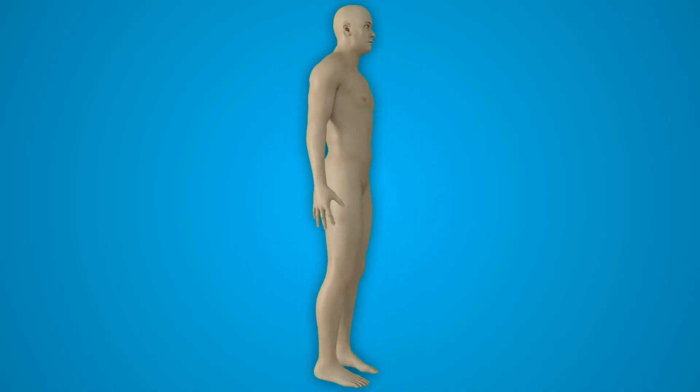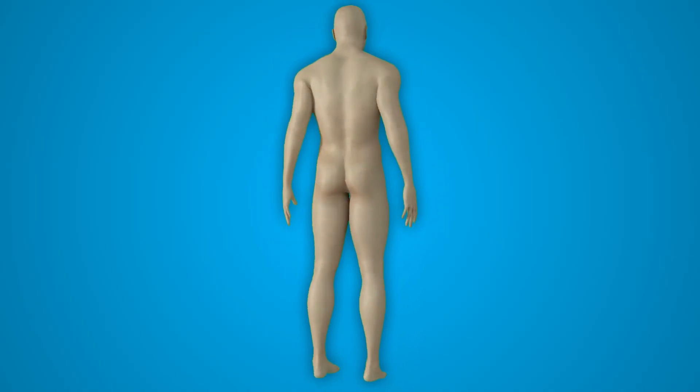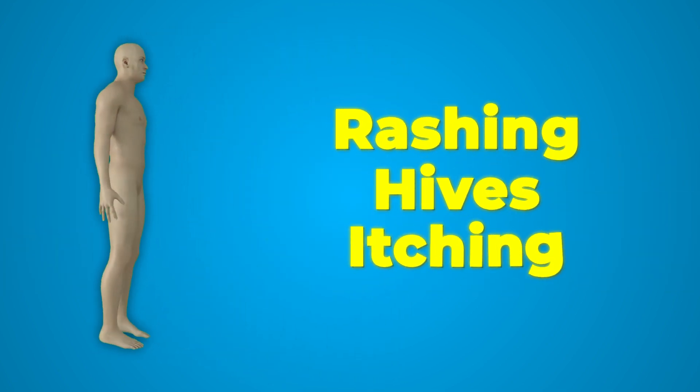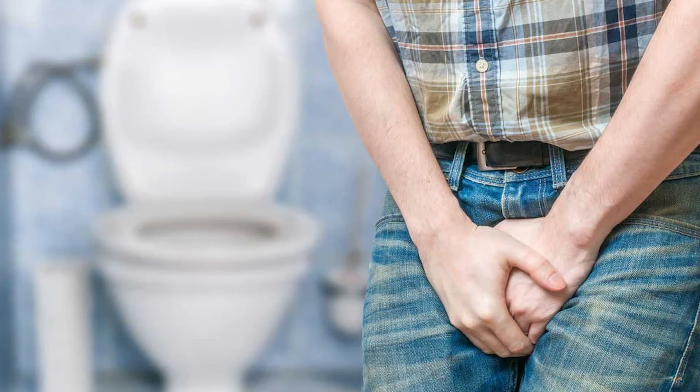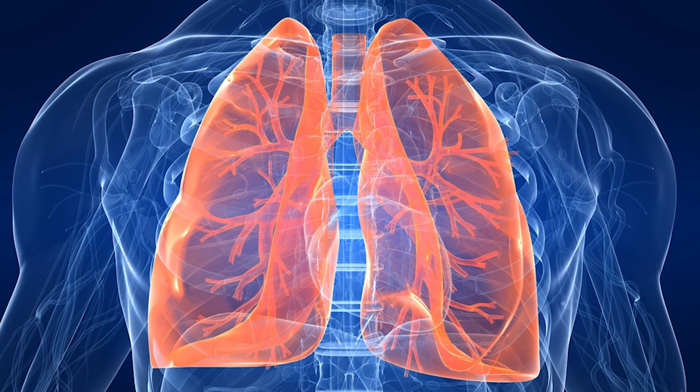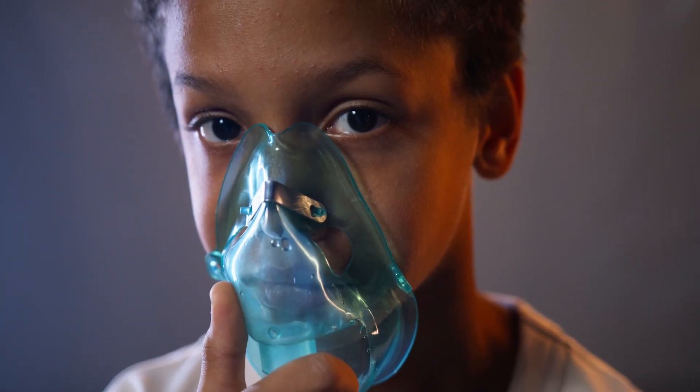Now these are common symptoms, and it's important not to just race to a judgment that it's mast cells causing them. It's very important to talk with your doctor about other possible explanations. But some other signs and symptoms of mast cell activation that could be present in other parts of the body include rashing, hives, itching, urinary symptoms — people may have been diagnosed with interstitial cystitis — and inflammation in the lungs, which may be diagnosed as asthma.